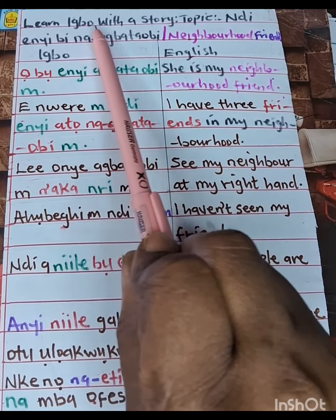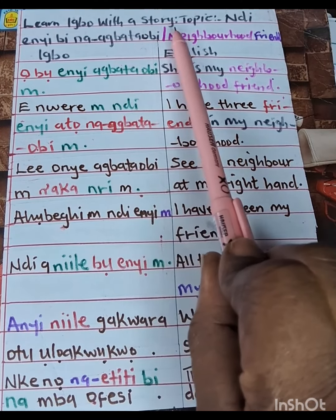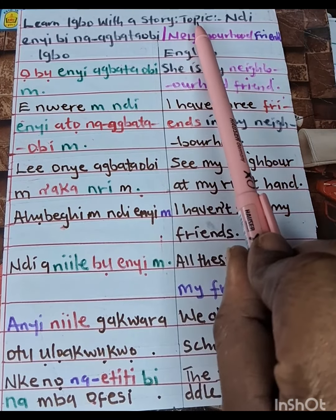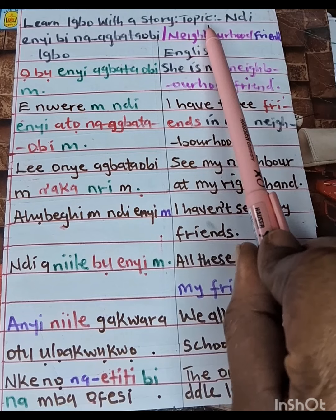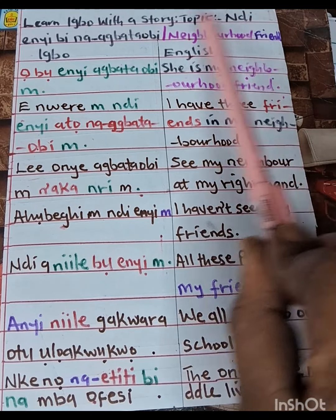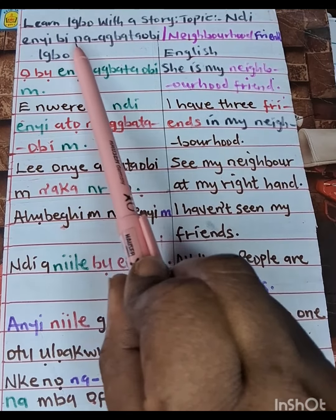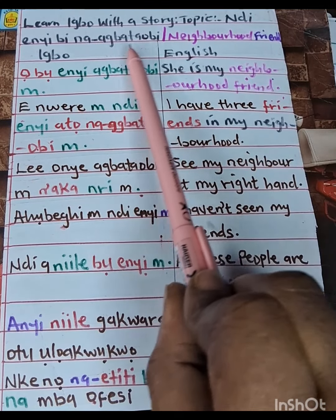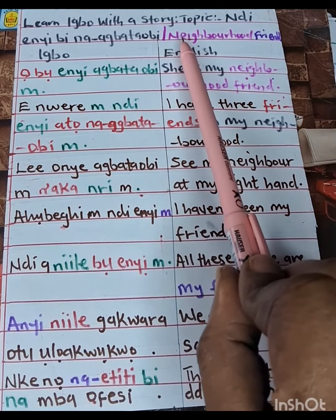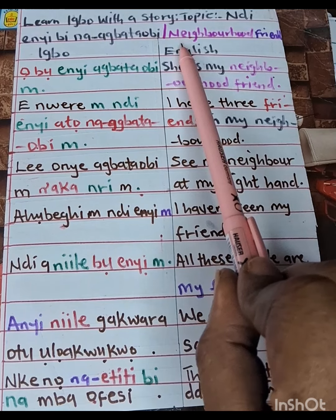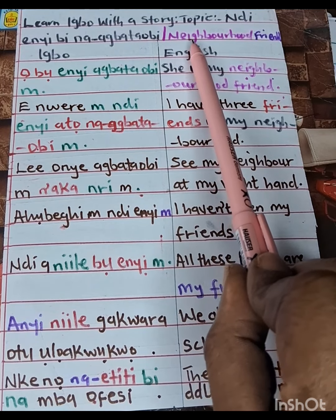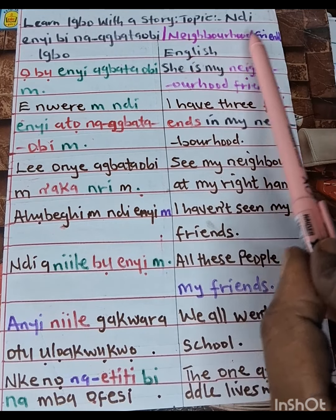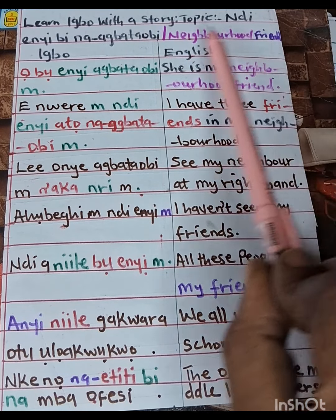Learn Igbo with a story. Topic: ndi enyi bi na abatobi. In English: neighborhood friends.